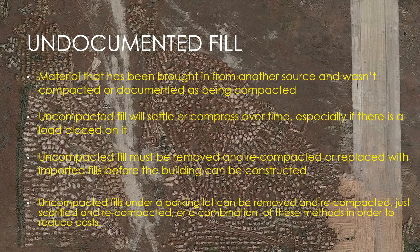Undocumented fill is any material that has been brought in from another source that wasn't compacted or documented as being compacted. If you look at the background, you can see a bunch of end dump piles there. They haven't been compacted, so we can't put a building on them because it will compress or settle over time. Uncompacted fill must be removed and recompacted or replaced with imported fills underneath a building before the building can be constructed.